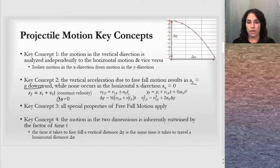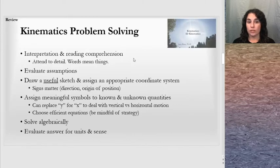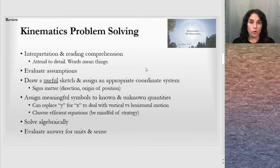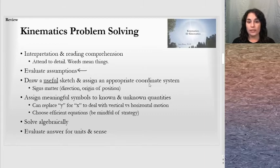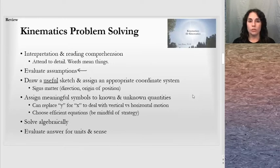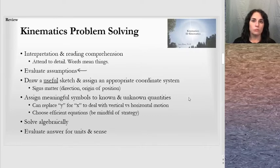A few tips on kinematics problem solving, as seen with 1D kinematics: read carefully — interpretation and reading comprehension matter, and words give us values or cues for setting up equations. Evaluate assumptions well so you don't set up the problem wrong. Use a useful sketch and assign an appropriate coordinate system. In two dimensions, designate positive and negative directions — signs matter. Assign meaningful symbols to knowns and unknowns, replace x and y where needed, and choose efficient equations based on your knowns and unknowns.